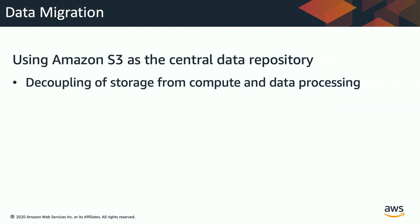There are several ways you can do data migrations, but what are some best practices when you migrate to Amazon EMR with your data? The first one is we highly recommend using Amazon S3 as your central data repository. When you use Amazon S3 for your data storage, you can decouple your storage from your compute and data processing layers — that means you can scale up or scale down your storage layer without dependency on the compute layer.